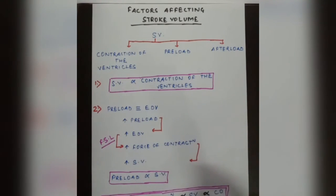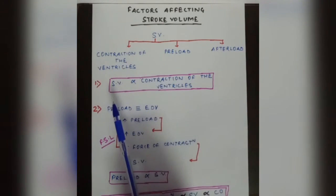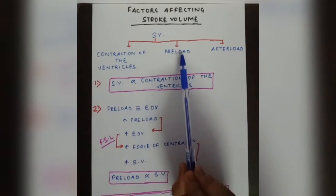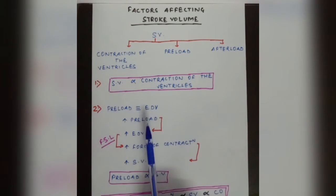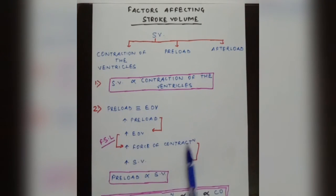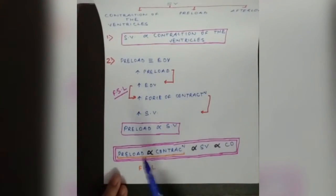The more the ventricles contract, the more blood is ejected, and the more the stroke volume. Stroke volume is the volume of blood ejected by each ventricle per beat — the normal value is 70 milliliters. Preload is the second factor affecting stroke volume. Preload is nothing but end diastolic volume. The more the preload, the more the end diastolic volume, and through Frank-Starling law, the more the force of contraction, so the more the stroke volume. Preload is directly proportional to stroke volume.